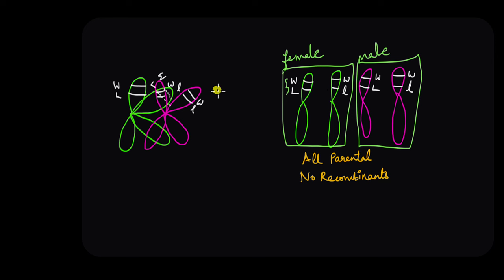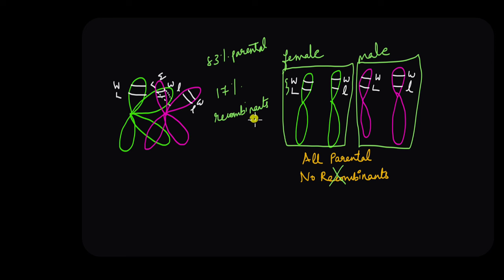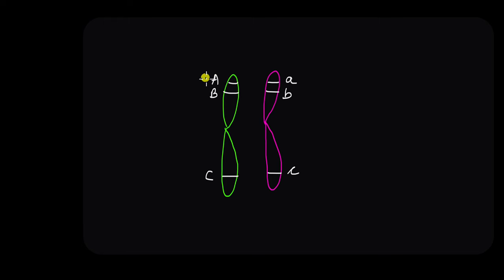But does this still explain how Morgan got 17% recombinants? To answer that, consider three genes A, B, and C located on the same pair of homologous chromosomes, with alleles capital A and small a, capital B and small b, capital C and small c. A and B are located very close to each other on the chromosome, whereas B and C — and A and C — are located very far apart.